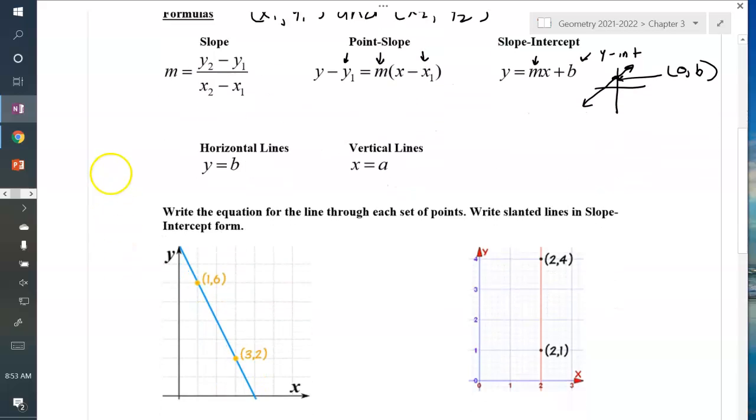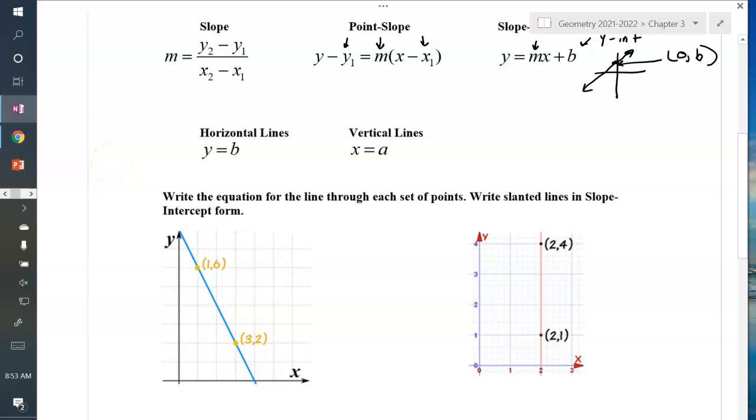And then two more, just as a reminder, horizontal lines. Horizontal lines go side to side. And those are in the form y equals b. So if I was to graph one of those, right there is the point 0, b.